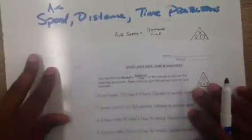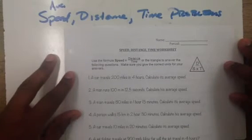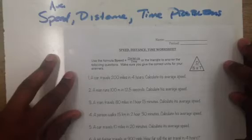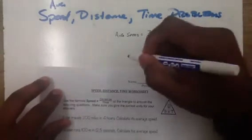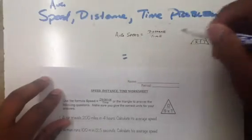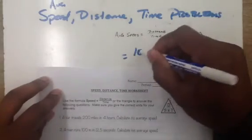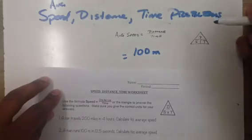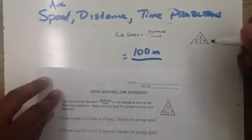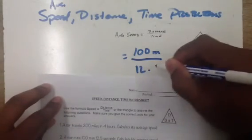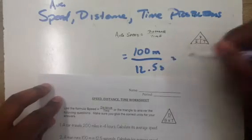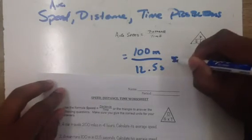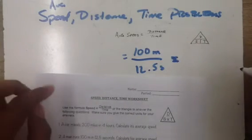The second one says a man runs 100 meters in 12.5 seconds. Calculate his average speed. Again, we're looking for average speed so we can use the same formula. The average speed is going to be equal to the distance, which is 100 meters, divided by the time, which is 12.5 seconds. You can pause the video and do the math on your own if you like.